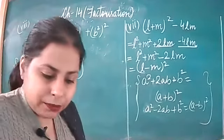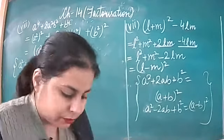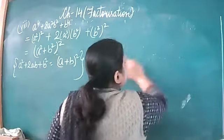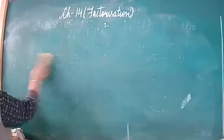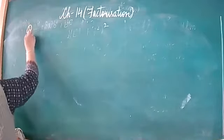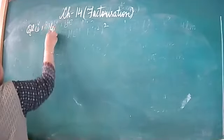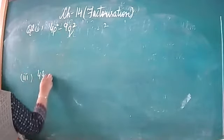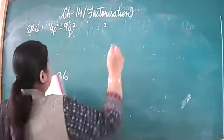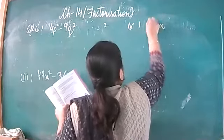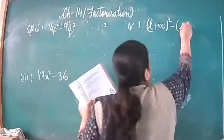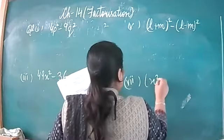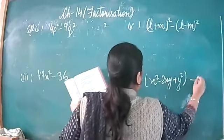Next is question number 2. Question 2: first part is 4p squared minus 9q squared; third part is 49x squared minus 36; fifth part is (l plus m) whole square minus (l minus m) whole square; seventh part is x squared minus 2xy plus y squared minus z squared.